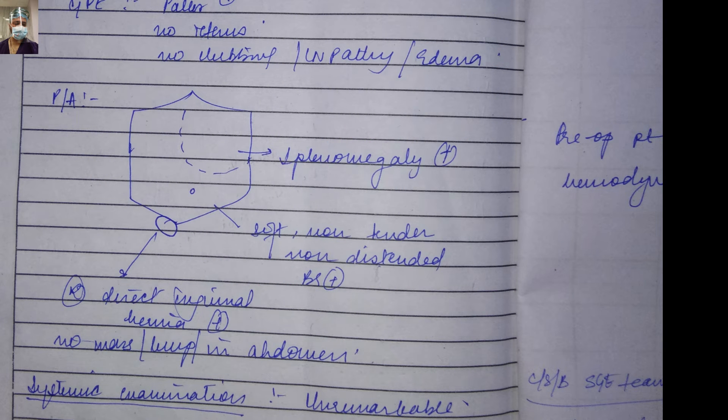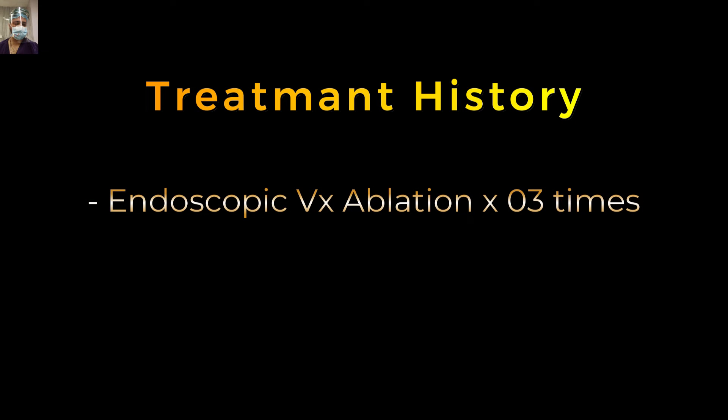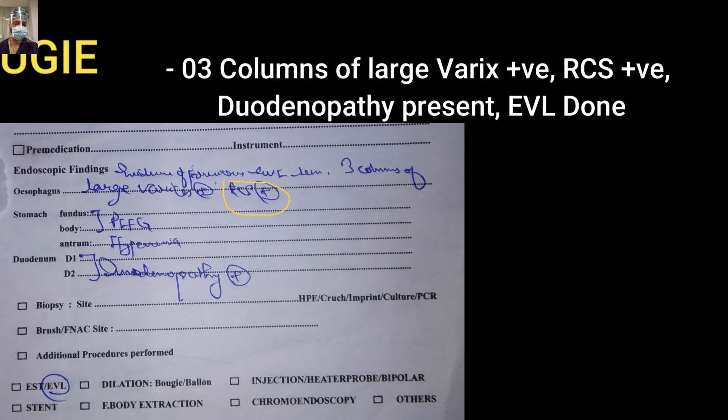Before coming to us, this child had already undergone three endoscopic variceal band ligations at a peripheral institute. On review endoscopy at our center, there was evidence of previous EBL, three columns of large varices, a red clot sign — a sinister sign indicating imminent hemorrhage — portal hypertensive gastropathy in the fundus and body, hyperemia in the antrum, and duodenopathy in D1-D2.